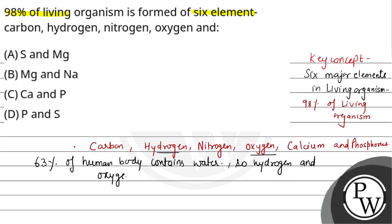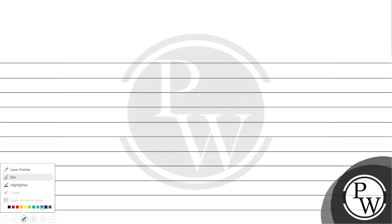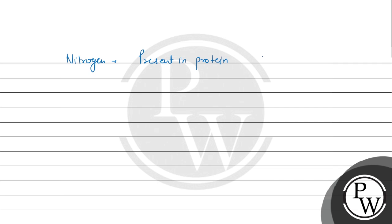If we talk about carbon, that is the main element present in the human body because it is the unit of organic compounds. Carbon is present in proteins and also present in nucleic acids like DNA and RNA, which are in high amounts.